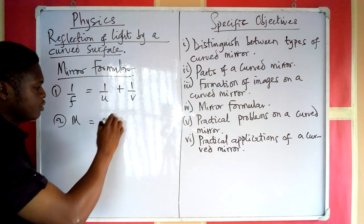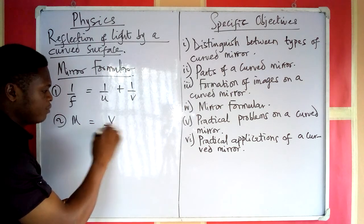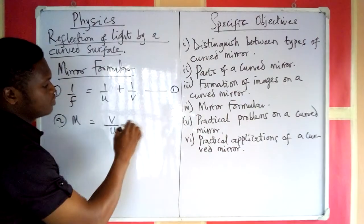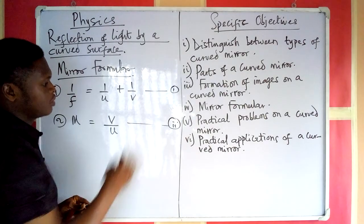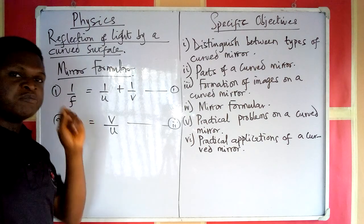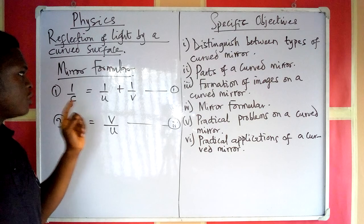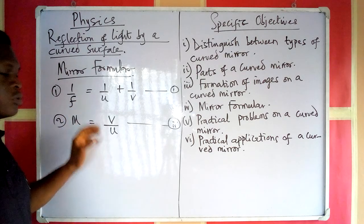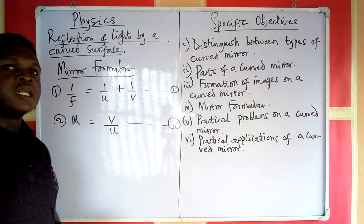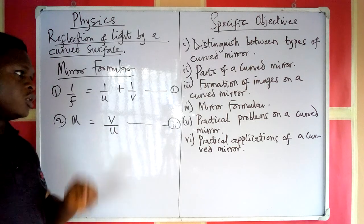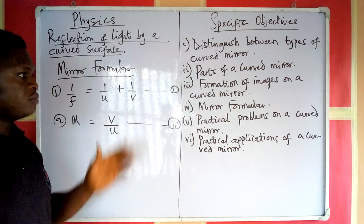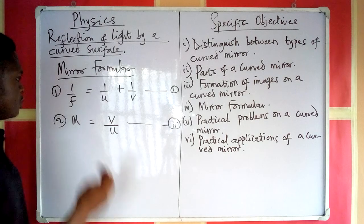Magnification m is given as the image distance divided by object distance. We regard the mirror formula as the first equation, and magnification as the second equation. Remember, we call the first one the mirror formula. Both of these can always be applied in solving practical problems involving curved mirrors. We will now go into solving some practical problems under curved mirrors.